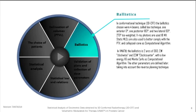The next step is the choice of ballistics. In the 3D conformal technique, the ballistics chosen were four beams, called the box technique: one anterior, one posterior, and two laterals. X-ray photons are used at 18MV. Static multi-leaf collimators are also used to better comply with the PTV, and collapsed cone as a computational algorithm. In VMAT, the ballistics in two arcs are of 360 degrees clockwise and counter-clockwise, with a low energy X6 and Monte Carlo as a computational algorithm.